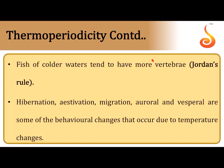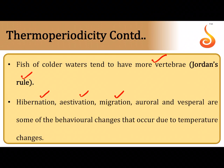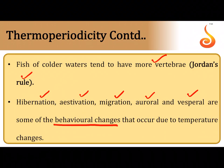Fishes of colder waters tend to have more vertebrae — this is referred to as Jordan's rule. Animals also exhibit behavioral changes such as hibernation in winter, estivation in summer, and migration during winters from the northern hemisphere to the southern hemisphere due to very cold conditions. Auroral animals are active during early mornings; vesperal animals are active during the evening or dusk. These behavioral changes also involve a component of changes in light intensity.